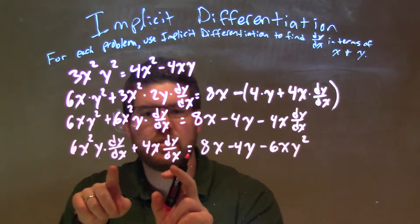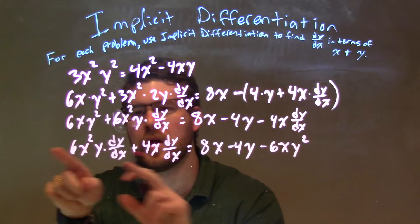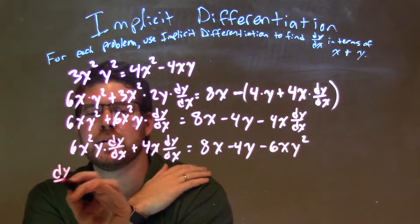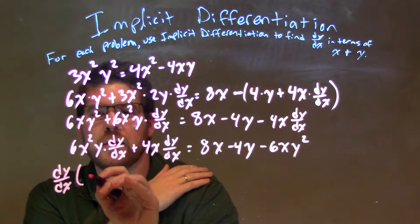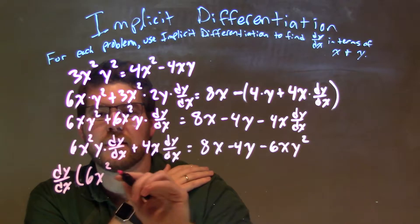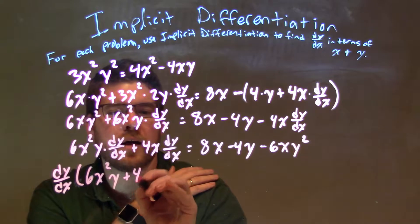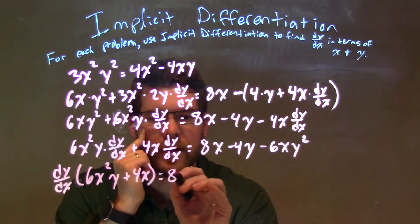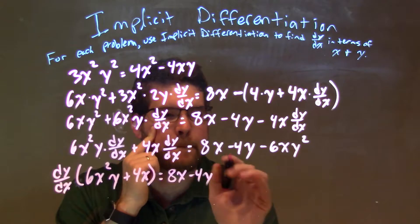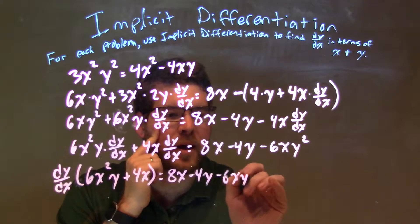Now I see I have dy/dx on my left, everything else on my right, I'm going to pull out a dy/dx. So I have dy/dx times what's left, which is 6x²y plus 4x, and that's going to be equal to this part here: 8x minus 4y minus 6xy².